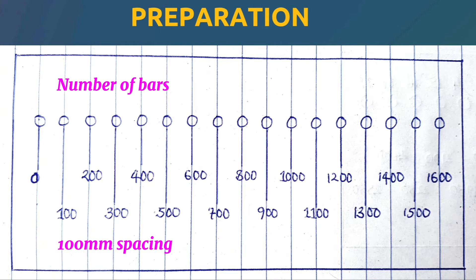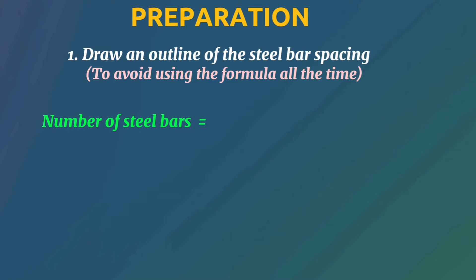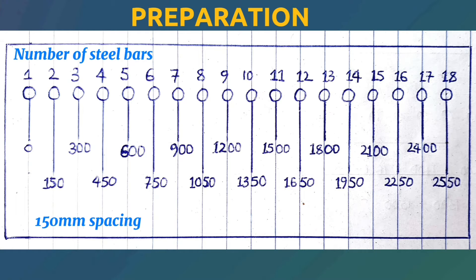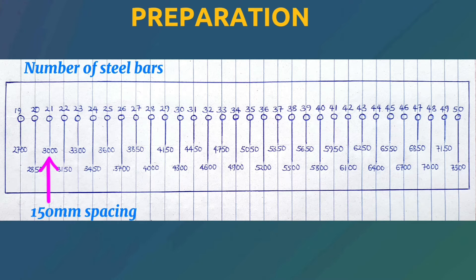Similarly, if you intend to use a spacing of 100 millimeters, simply make an outline showing the number of steel bars at the top and the spacing at the bottom. This will save you a lot of time as you don't need to go through multiple formulas to find out how many steel bars fit in a certain space. You simply refer to your outline — for a 900 millimeter element you need 7 steel bars, for 2.4 meters you need 17 steel bars, for a 3 meter distance you need 21 steel bars, as simple as that.